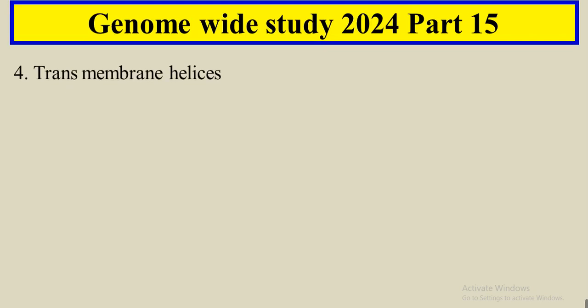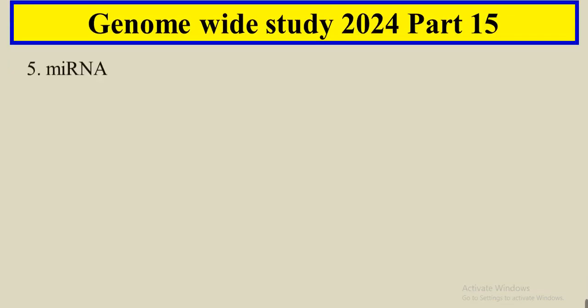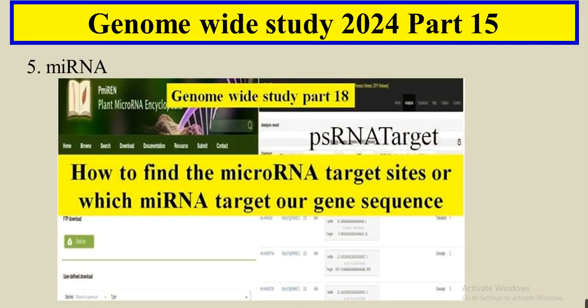The fourth and most important analysis — if you are working on transporters — is the transmembrane helices analysis: how many transmembrane regions your protein transporter contains, what region is inside and what is outside. The fifth analysis is the microRNA — what type of microRNA interacts with your protein or gene and how it regulates expression, and how you can get the sequences of those microRNAs related to your protein family.